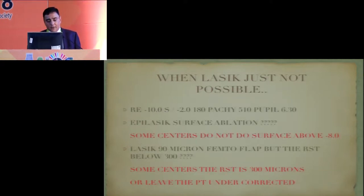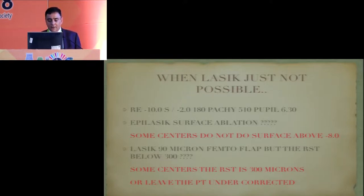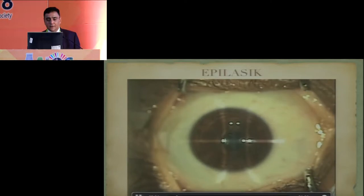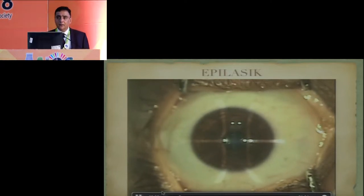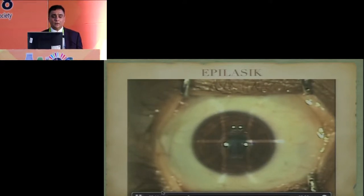For other possibilities, such as minus 10 with 2 diopters at 180 and a pachymetry of 510, many people do not do surface treatment for more than minus 8. If the patient has a good anterior chamber depth, go ahead and do a toric ICL. If you are thinking of LASIK, I keep a residual bed of 300 microns. For surface treatment, I use something called EpiLASIK, where the epithelium is removed by the laser itself — no scraping, no alcohol. This behaves much better. We now have smart pulse technology; the ablation is much closer and healing is faster — about 1.5 to 2 days for epithelial healing.